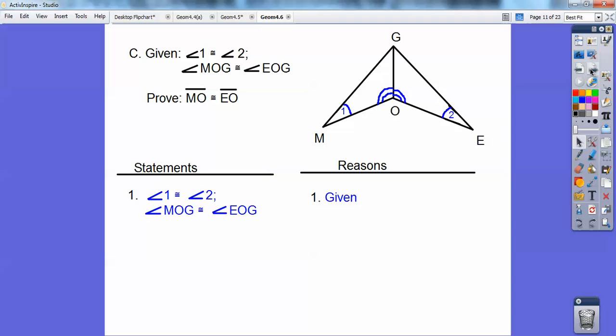Okay, so the first statement is always the given. Notice I marked them. Looks like I didn't separate them. I didn't have to on that one right there. Okay, is there any reflexive happening on there? And yeah, it shares GO. So GO is congruent to GO, reflexive property. And then can you see those triangles are now congruent? It goes angle, angle, side. So I just got to say it in the correct order. I think I'm going to say MOG is congruent to EOG.